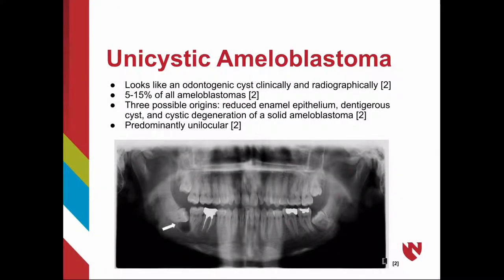Unicystic ameloblastoma looks like an odontogenic cyst clinically and radiographically, and accounts for 5 to 15 percent of all ameloblastomas. The three possible origins are the reduced enamel epithelium, dentigerous cyst, or cystic degeneration of a solid ameloblastoma. It is predominantly unilocular.